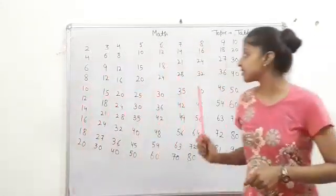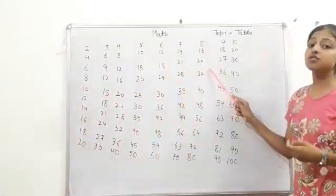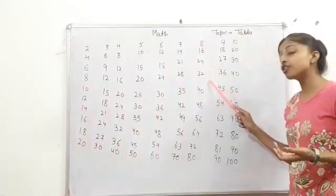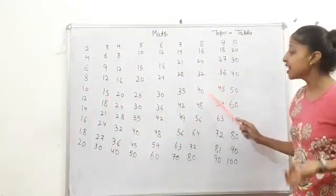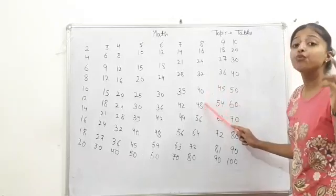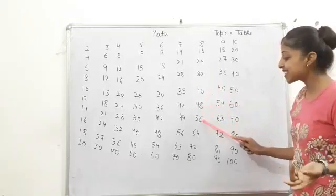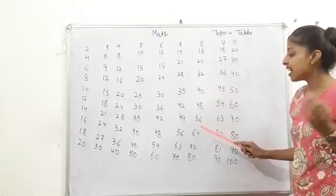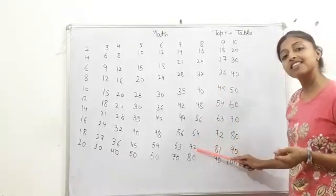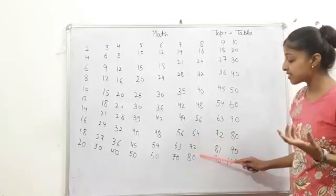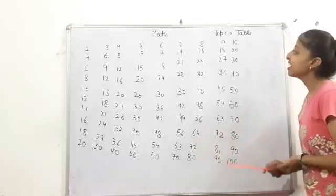Next, 8 ones are 8, 8 twos are 16, 8 threes are 24, 8 fours are 32, 8 fives are 40, 8 sixes are 48, 8 sevens are 56, 8 eights are 64, 8 nines are 72, 8 tens are 18.